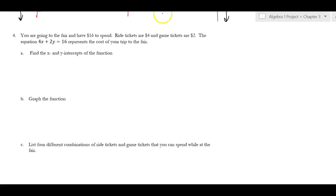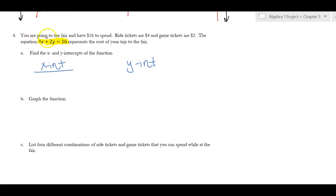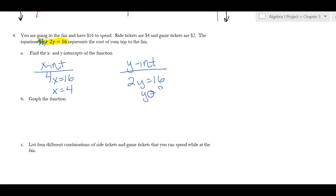Here's an application problem: you're going to the fair with $16 to spend. Ride tickets are $4 and game tickets are $2, and the equation is given as 4x + 2y = 16. For the x-intercept I cover up the y: 4x = 16, divide by 4, and x = 4. For the y-intercept I cover up the x: 2y = 16, divide by 2, and y = 8. Those are our intercepts.